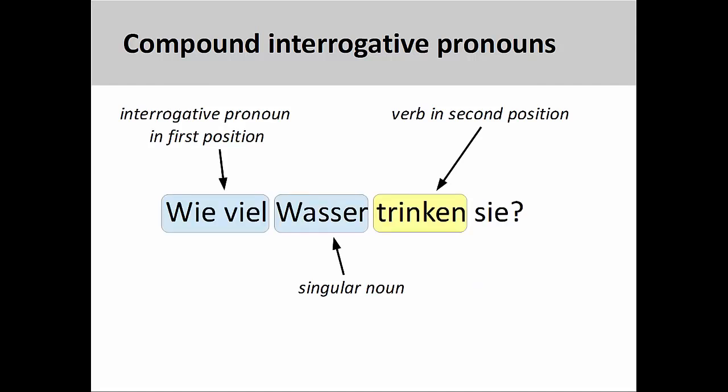The interrogative pronoun wie viel, how much, is usually used in conjunction with a singular noun to ask about the quantity or volume of that noun. For example, wie viel wasser trinken Sie? How much water are they drinking? The verb technically still comes in the second position, after the compound interrogative pronoun and the noun it precedes.